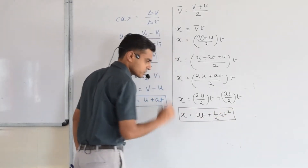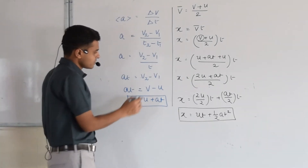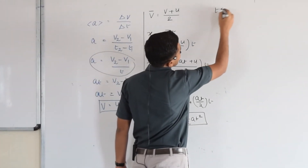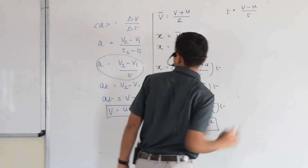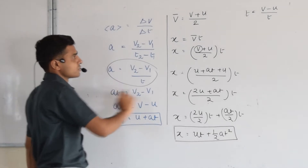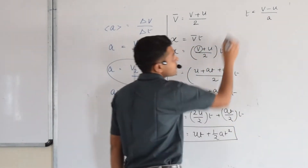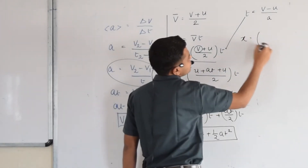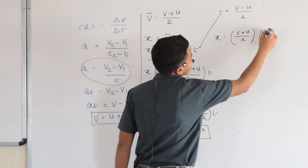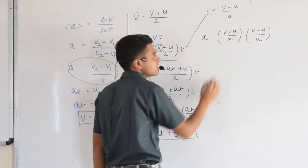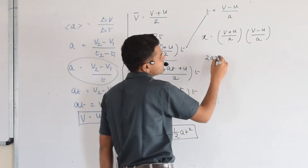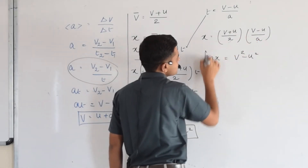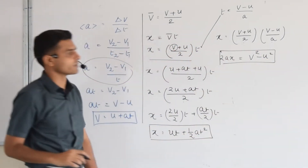That is the second equation of uniform accelerated motion. To derive the third equation, we take T equals (V minus U) divided by A from the first equation and substitute into X equals (V plus U) over 2 into T. This gives 2AX equals (V plus U)(V minus U), which equals V squared minus U squared.